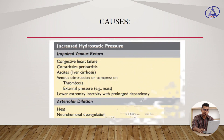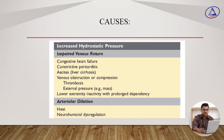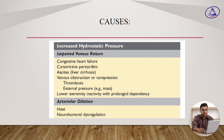Causes of edema: increased hydrostatic pressure due to impaired venous return and arteriolar dilatation. Examples of impaired venous return include congestive heart failure, constrictive pericarditis, liver cirrhosis, venous obstruction or compression due to thrombosis or external pressure, and lower extremity inactivity with prolonged dependency. Examples of arteriolar dilatation include heat and neurohumoral dysregulation.